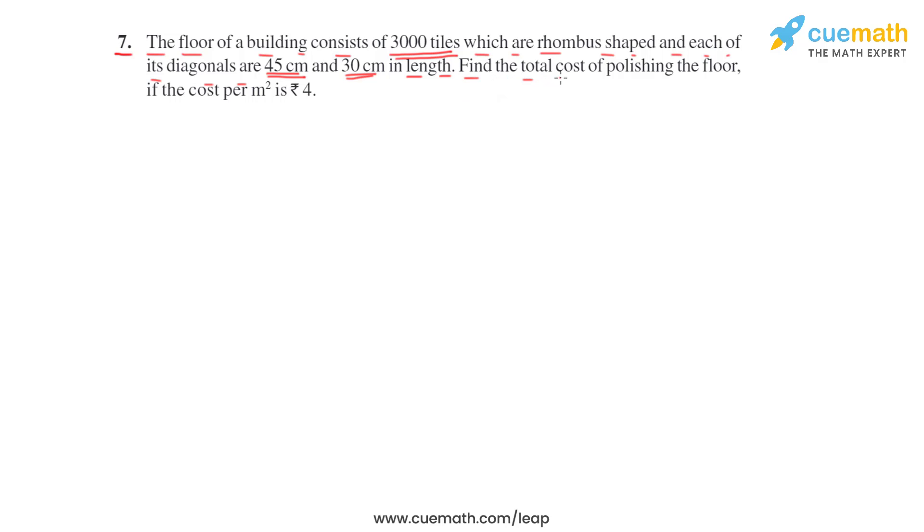Then find the total cost of polishing the floor if the cost per square meter is rupees 4. That is, the rate of polishing is given rupees 4 per square meter. The diagonals of the rhombus shaped tiles are given, that is 45 cm and 30 cm, and there are 3000 such tiles on the floor. We have to find the total cost of polishing the floor.